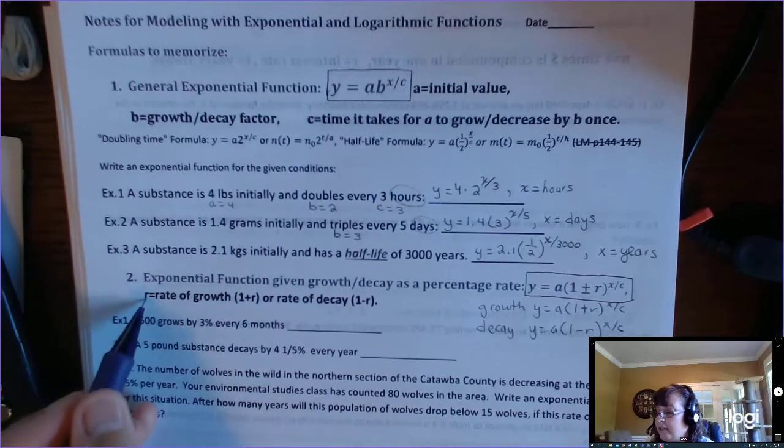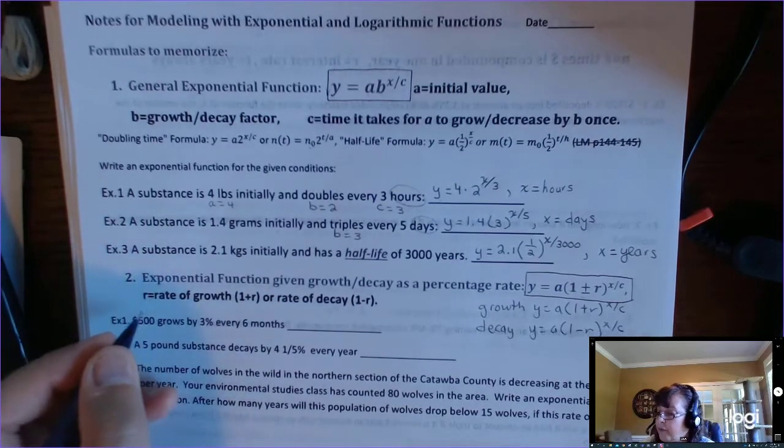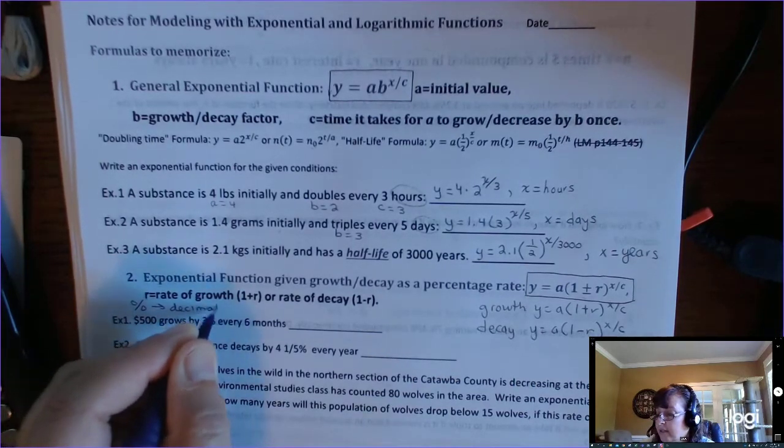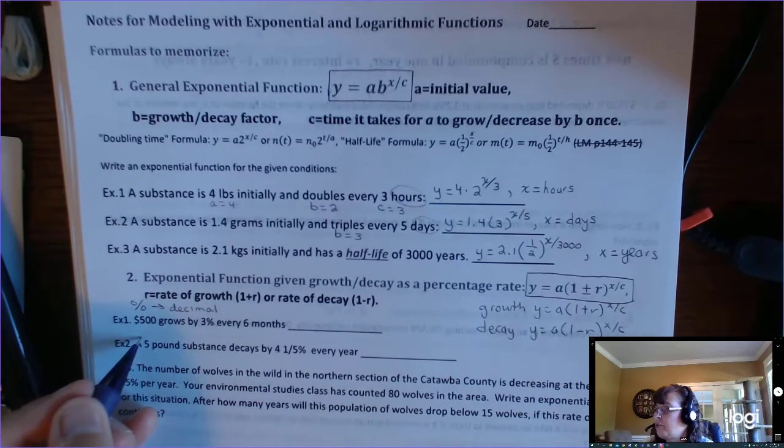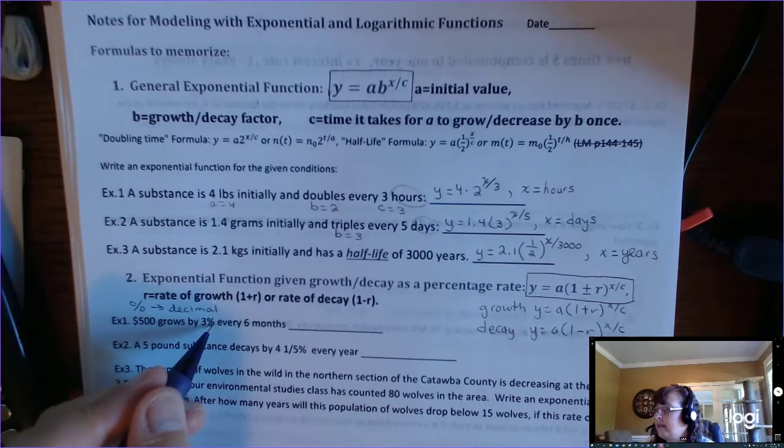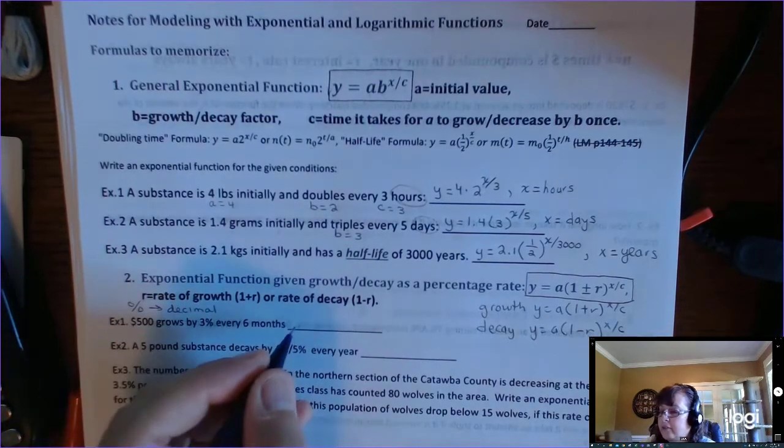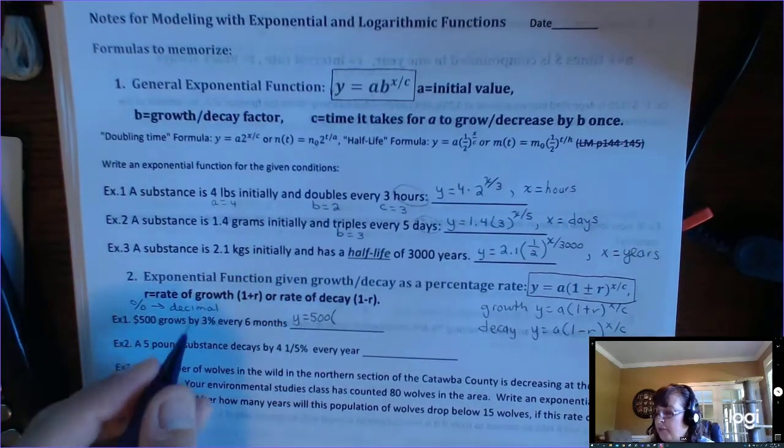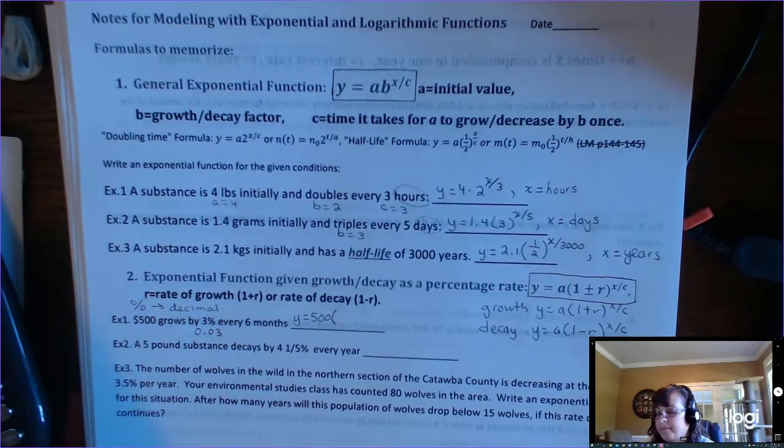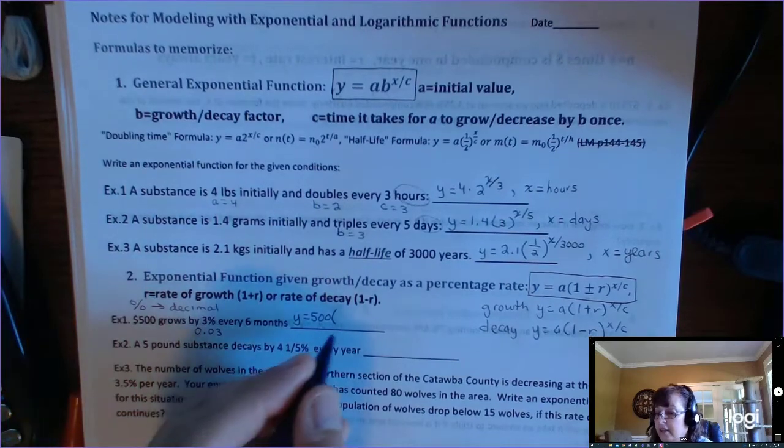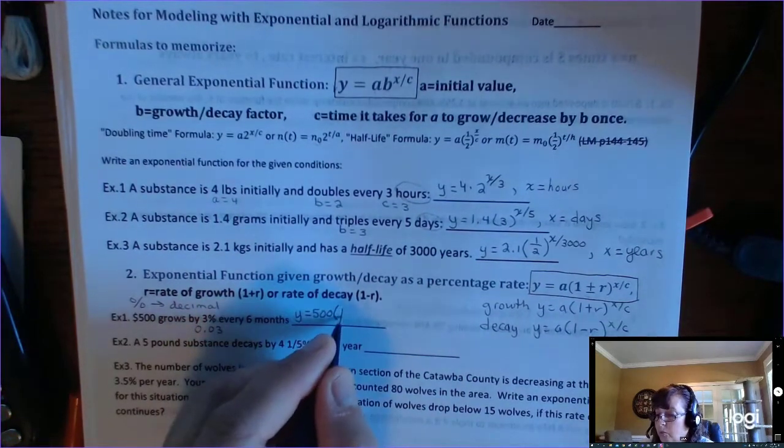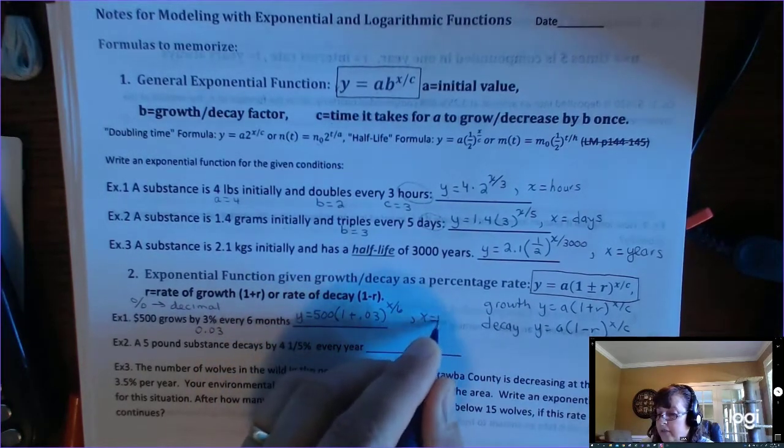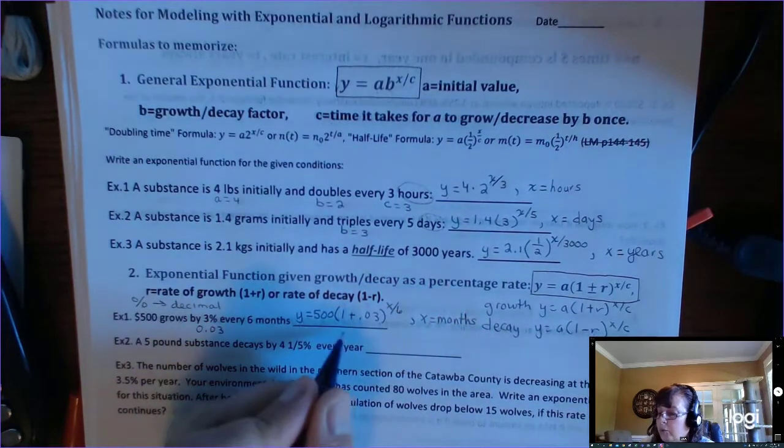So R is given to you as a percentage, and so you have to remember to convert the percentage, always have to convert it to a decimal. So let's look at this example. $500 grows by 3% every six months. So we have Y equals our initial value, 500. And 3% is 0.03. So now I can explain why the 1 is there. So in the formula, we're given a percent. So this is going to be 1 plus 0.03 to the X over 6, where X is in months.